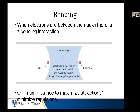When electrons are between the nuclei, there is a bonding interaction. Let's pretend both nuclei are hydrogen — hydrogen is easy. We have the 1s orbital of one hydrogen, which looks like a circle because it's spherical, and we have the 1s orbital of another hydrogen. Each has one electron in it. When those two orbitals come together, nature loves conservation laws — there's a law called conservation of orbitals. If I have two orbitals coming together, I have to have two orbitals coming out, and they also have to have the same energy.